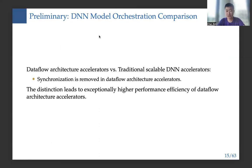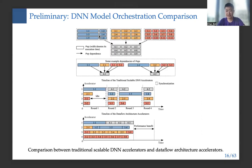Here we give a comparison between the two different architecture accelerators. The distinction is that synchronization is removed in dataflow architecture accelerators, which leads to exceptionally higher performance efficiency. For traditional scalable DNN accelerators, μOPs are scheduled per round with synchronization latency injected between rounds, and the slowest μOP determines the time interval of a round. But for dataflow architecture accelerators, we can execute the consumer μOP without any delay once the producer μOP is finished — there is no synchronization, giving greater performance benefit.